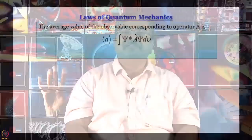This immediately opens up other aspects of quantum mechanical treatment and leads to the next postulate of quantum mechanics: the average value of an observable corresponding to an operator is given by the integral ∫ψ* Â ψ dV, where dV and dτ mean essentially the same thing — the volume of a small volume element.